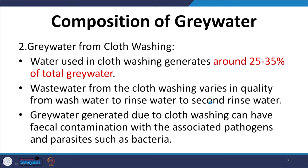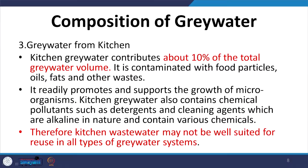Grey water from washing clothes constitutes around 25 to 35 percent of the total grey water generated, and again it contains a substantial amount of chemical contaminants because of the presence of detergents and soaps. Grey water from kitchens accounts for around 10 percent of total grey water volume and is contaminated with food particles — organic waste — as well as oils and fats, for which special traps like a grease trap may be required, along with some small quantities of chemical pollutants.